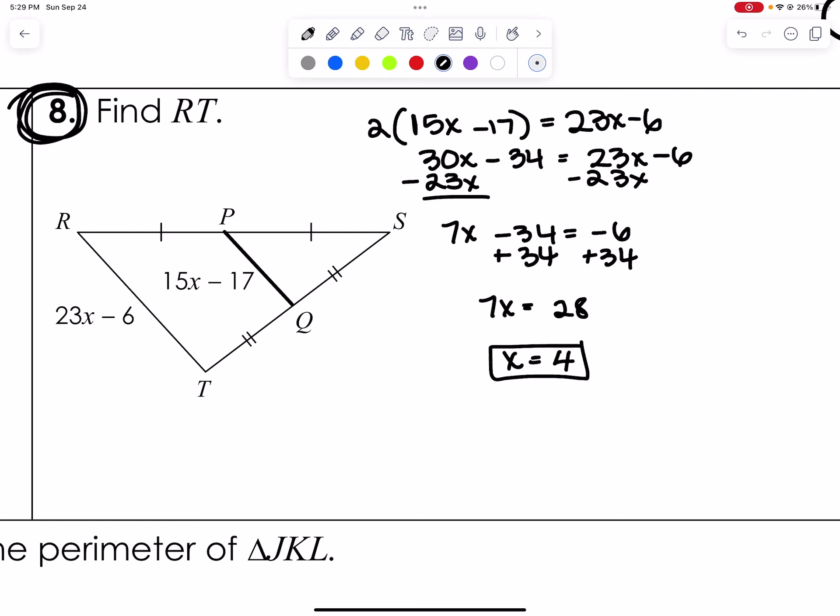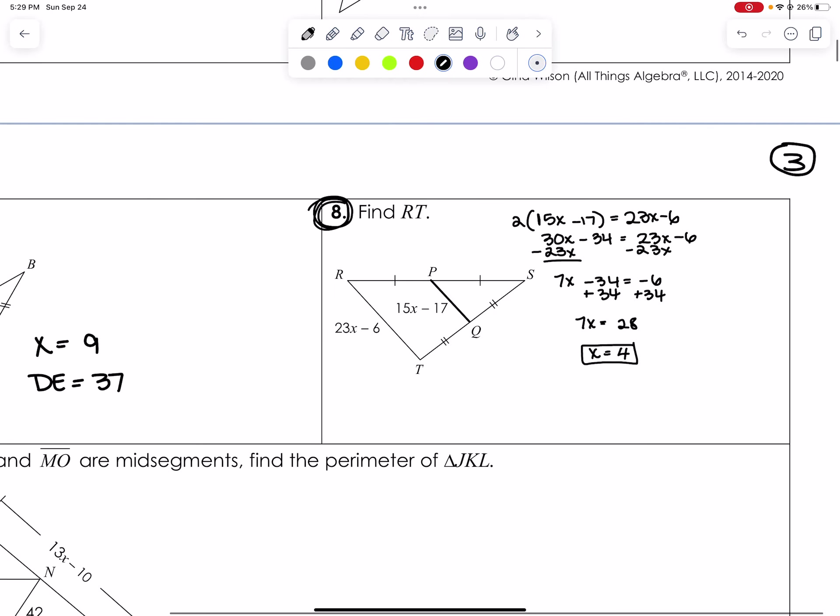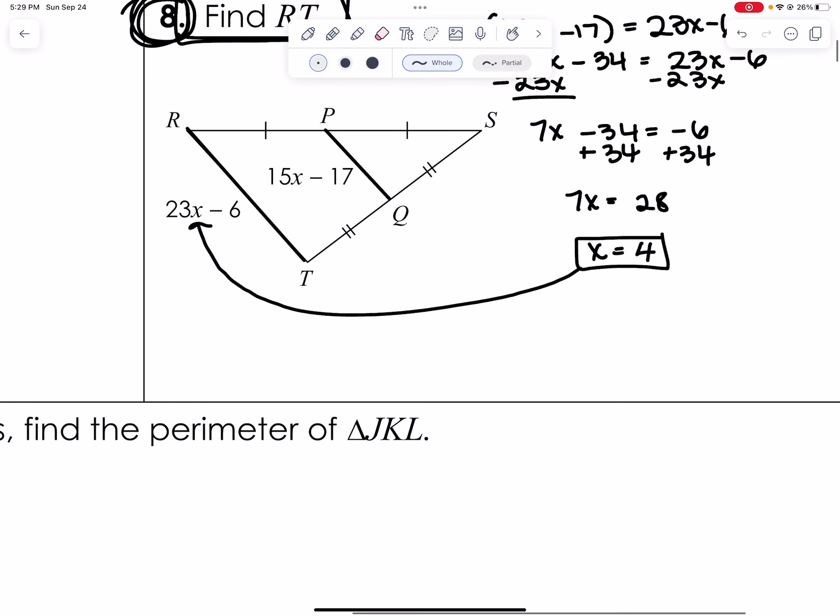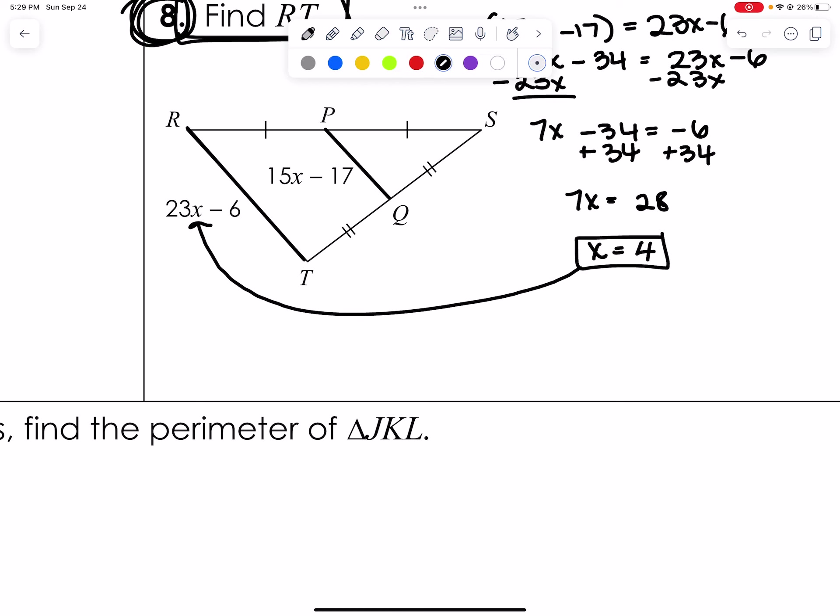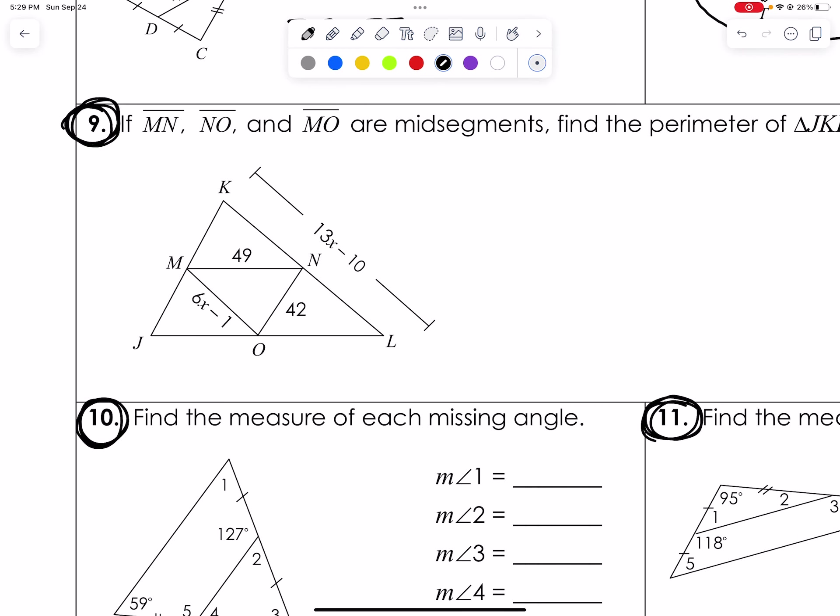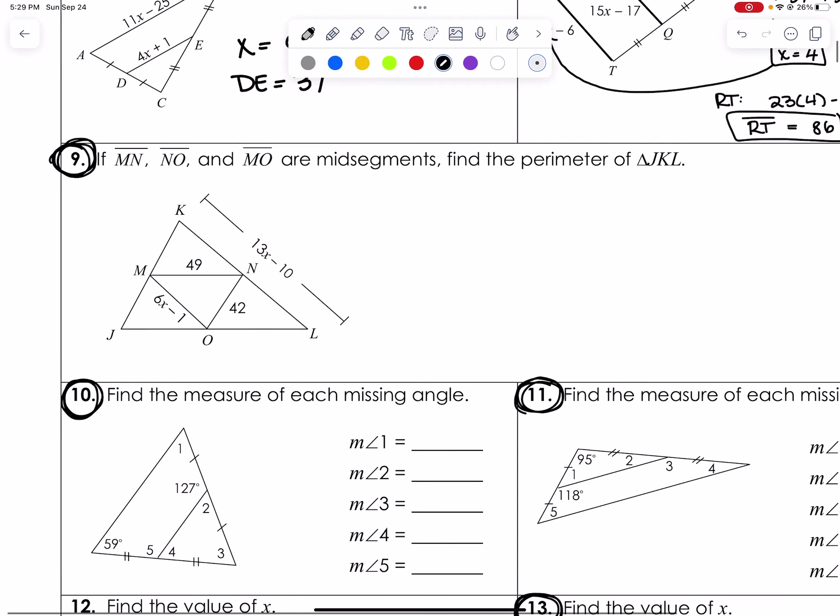I get 30x minus 34 equals 23x minus 6. Subtract from both sides. Let's get 7x minus 34 equals negative 6. Add 34 to both sides. 7x equals 28, and x equals 4. However, one thing I did miss here is that it's asking for RT. So that means I find RT. RT is here, the bottom baseline. And I plug x in. So my final answer will have to be the plugged-in version. And I set that up by labeling RT, 23 times 4 minus 6, and segment RT equals 86. There is no unit, so you can just leave it 86.